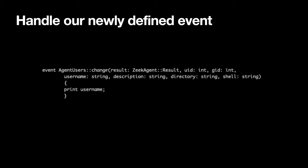Here's the event handler. There's a special field added at the beginning that is a record similar to the connection record — the Zeek agent result record. It tells you what host this is coming from, what kind of result it is — an add or delete, or one of the initial data set items. Then you've got your user ID, group ID, username, description, directory, and shell — exactly what we had in the query. All I'm doing here is printing username, but this is scalable — you could have lots of systems connect in. That's the whole thing: subscribe to a query, handle the result set.